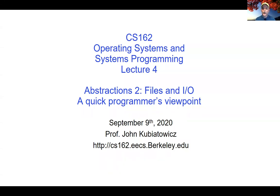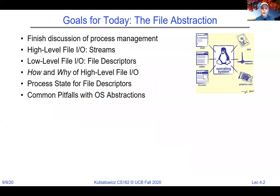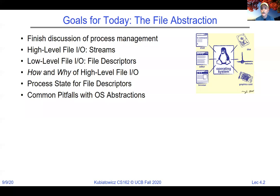Today we're going to continue our short discussion of abstractions at user level, both to help you get going in the class and to see what we're going to be doing in the kernel when supporting these abstractions. We'll talk about the file abstraction, which is really also the IO abstraction, finish discussing process management, and cover both the high and the low level file IO APIs, and look at some interesting gotchas that come about when you mix processes, file descriptors, and IO.